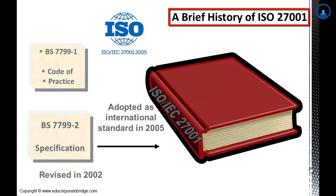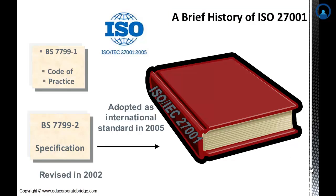A brief history of ISO 27001: ISO 27001 is derived from BS 7799 Part 1, revised in 1999. BS 7799 Part 2 was revised by BSI in 2002, explicitly incorporating Deming's Plan-Do-Check-Act (PDCA) cycle process concept. It was then adopted by ISO/IEC as ISO/IEC 27001 in 2005, and was extensively revised in 2013, bringing it into line with other ISO management system standards and dropping the PDCA concept.